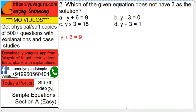Which of the given equations does not have 3 as a solution? The answer should be 3. So y plus 6 equals 9. See all this, we will solve one by one.